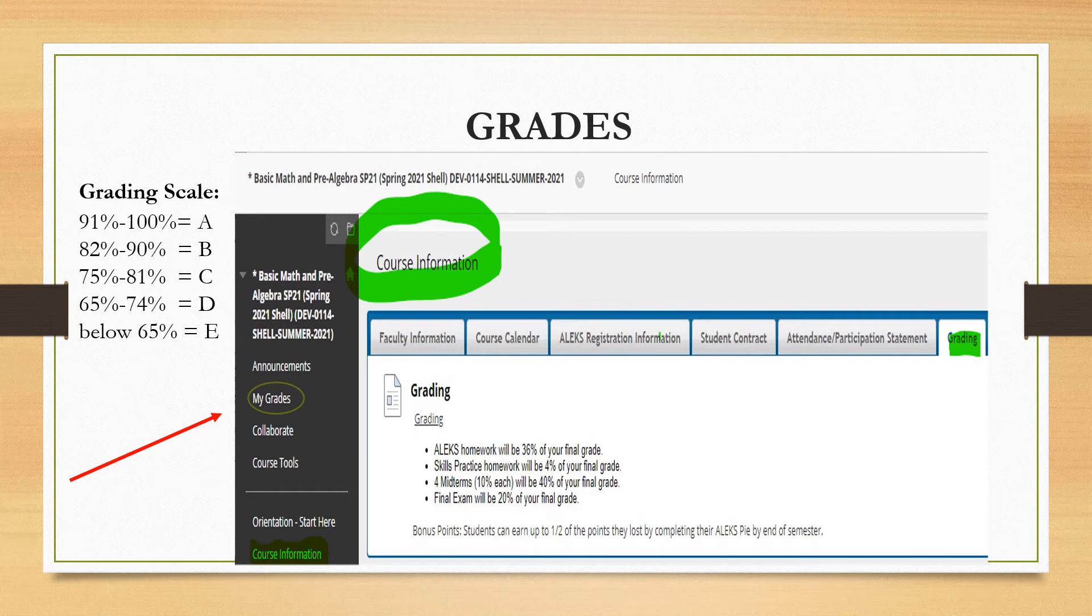Our grading policy is under the course information button. 40% of your grade is from homework and 60% is from tests. All tests this semester will be taken in Alex 360. Click the My Grades button in Blackboard to see your grades.